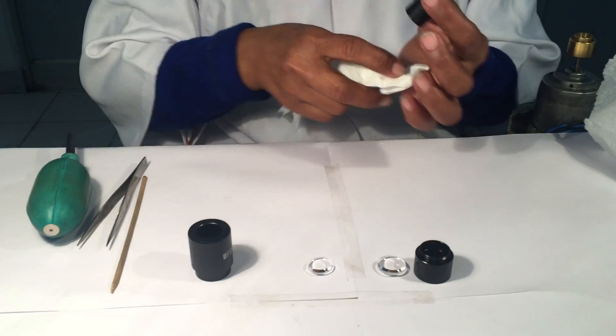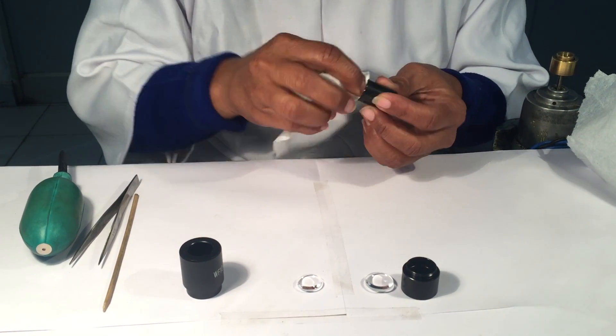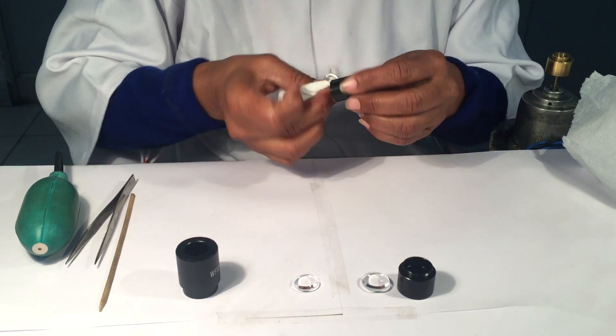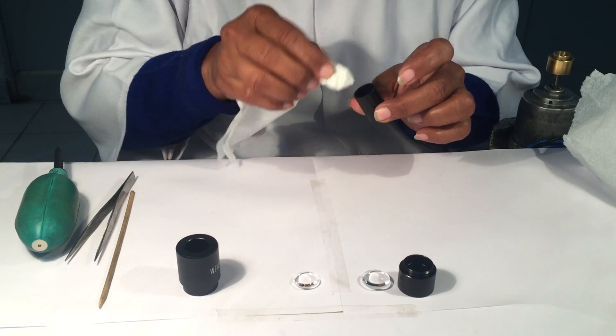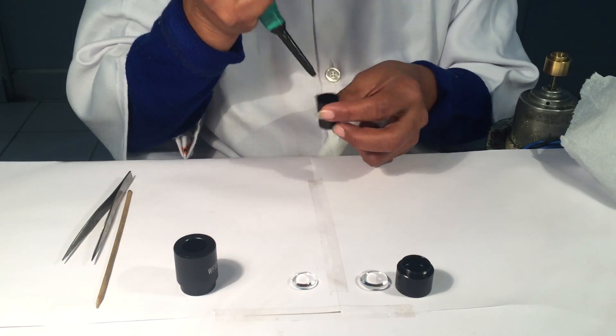We will take the spacer, we will do the same process of cleaning it inside with a cotton tissue paper and then air blow the same.